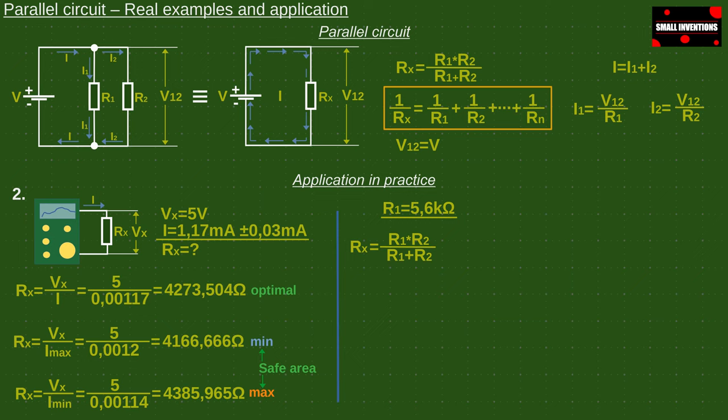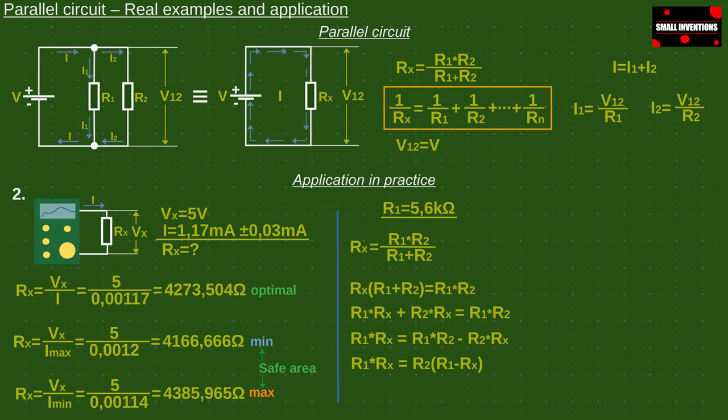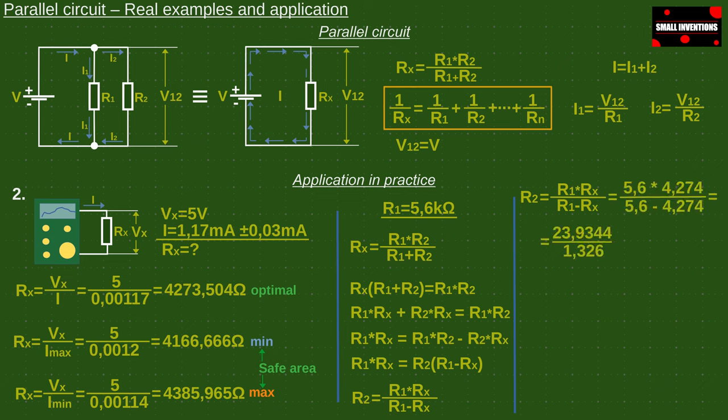We know the initial values of Rx and R1, let's calculate R2. We must first adjust the initial equation. Then we enter the values of the given resistance R1 and the calculated optimal resistance. We got a resistance value of R2 of 18.05 kilo ohms but we have already said that we will use the standard values by choosing 18 kilo ohms.